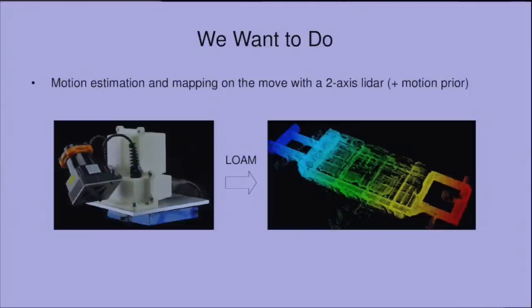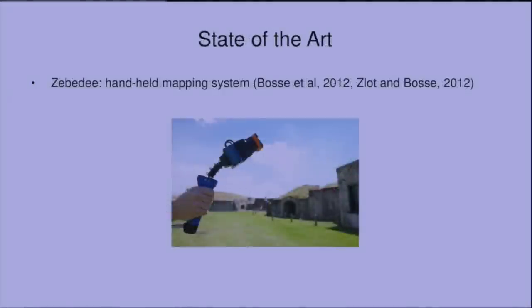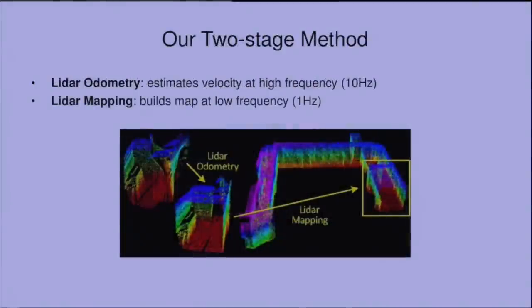The work most relevant to ours is a system called ZBYD. This is a 2D laser and IMU attached to a spring. Users manually oscillate the device. There is a batch optimization method that processes segmentations of the datasets to solve for motion. So this system works really well but only good for offline applications.